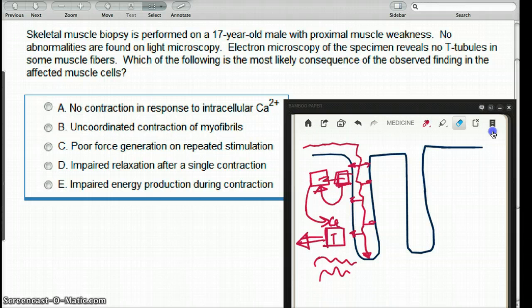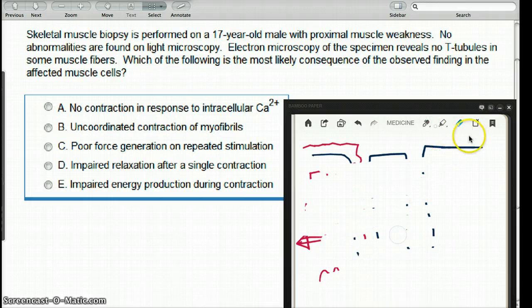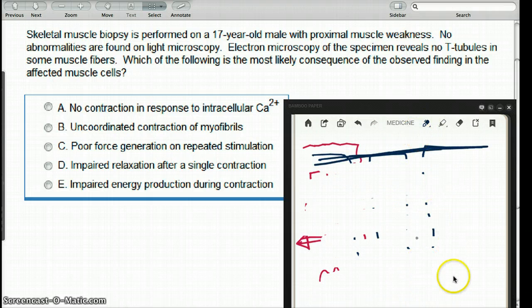So imagine that there are no T-tubules. What's going to happen? We're just going to have the sarcolemma. That kind of propagation down the T-tubules is not going to happen. If that kind of propagation doesn't happen, then muscle contraction is not going to be proper.